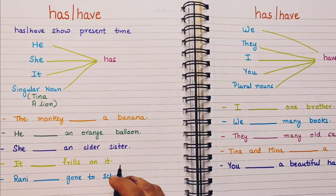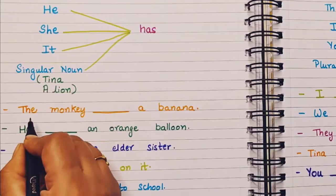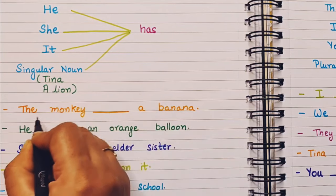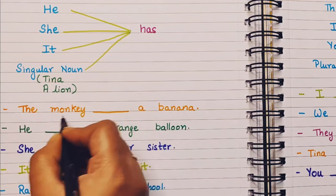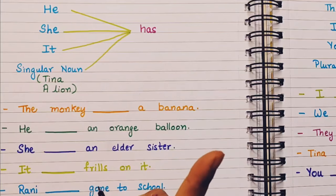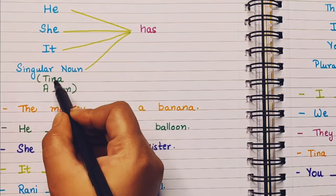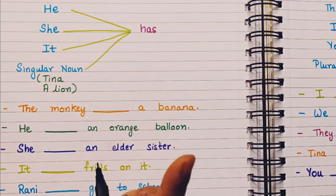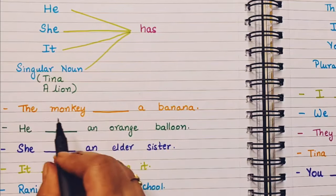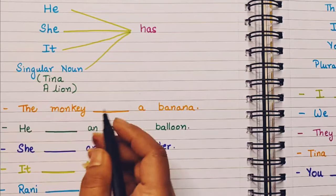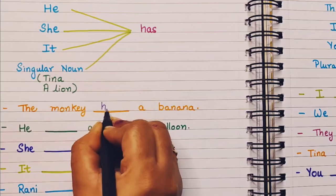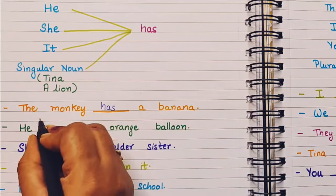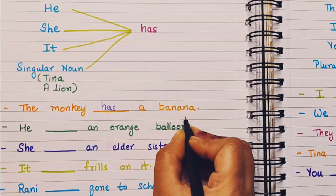Let us understand with some examples. The monkey — dash — a banana. The monkey represents one single monkey, so we have a singular noun here. Monkey is a noun and we are talking about a singular noun. So: the monkey has a banana.